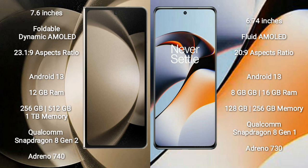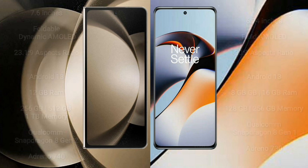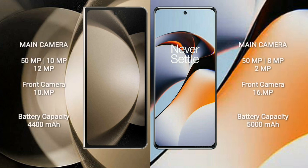OnePlus 11R comes with 8GB or 16GB RAM and 128GB or 256GB internal storage, a Qualcomm Snapdragon 8 Gen 1 processor, and GPU Adreno 730. Samsung Galaxy Z Fold 5 features a triple rear camera setup: 50MP plus 10MP plus 12MP, and a 10MP front camera.